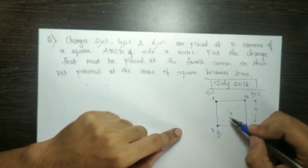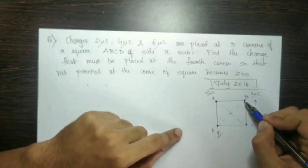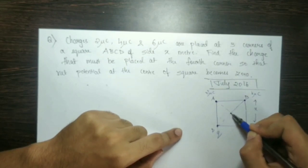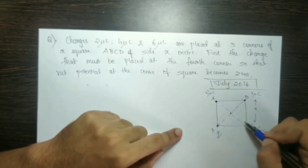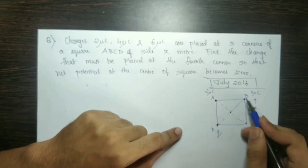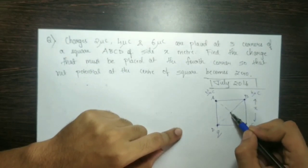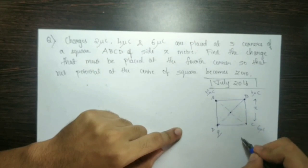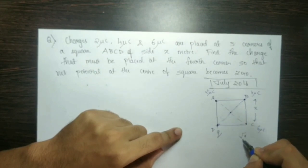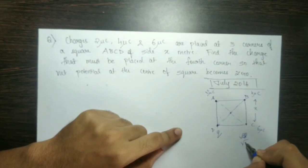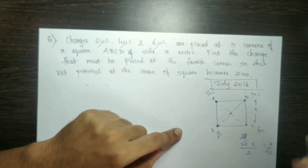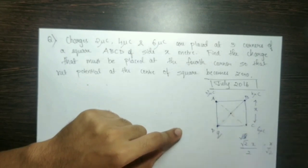First, we calculate the diagonal and the distance from each corner to the center. The diagonal of the square is root 2 times x. The half-diagonal — the distance from any corner to the center — is root 2 times x divided by 2, which equals x divided by root 2.